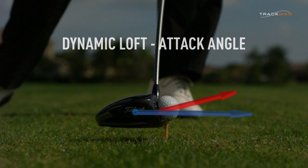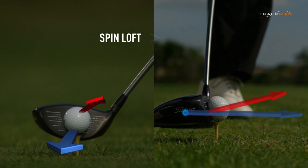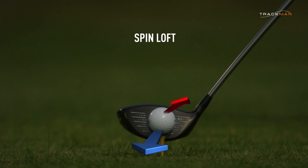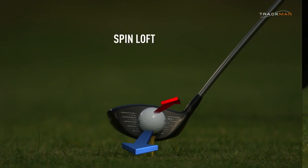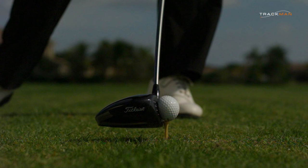However, as the face-to-path value becomes larger, the actual spin loft will have a greater value than the simplified calculation of dynamic loft minus attack angle. This is because spin loft is a three-dimensional angle. Assuming all else equal, the greater the difference between the dynamic loft and attack angle, the lower the smash factor and higher the spin rate.